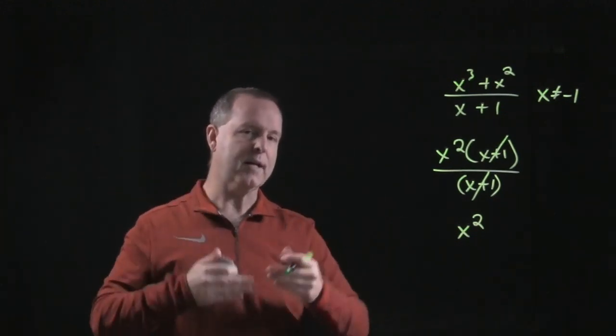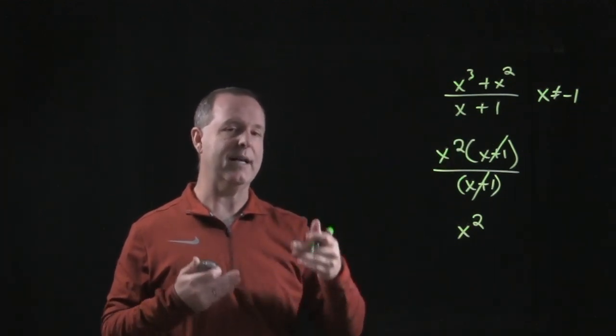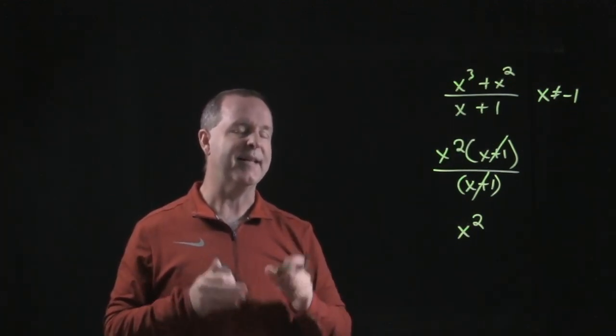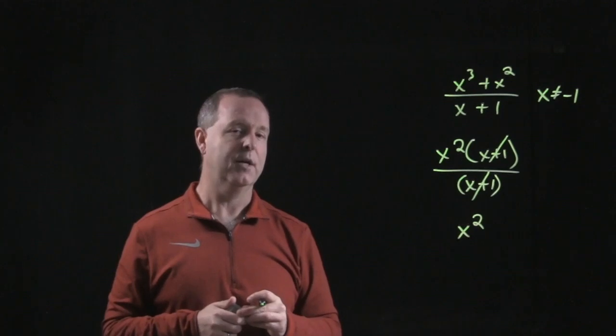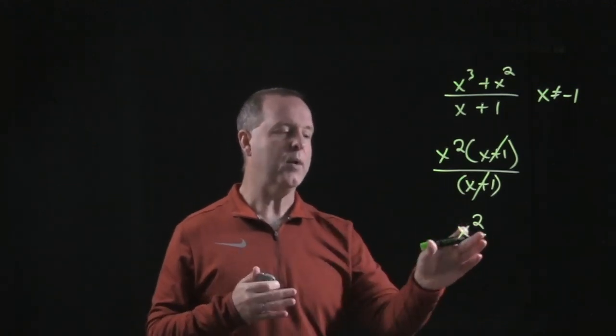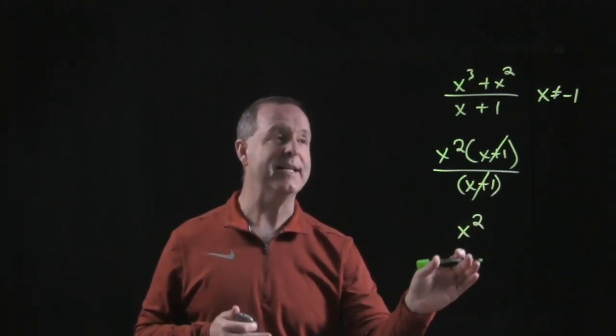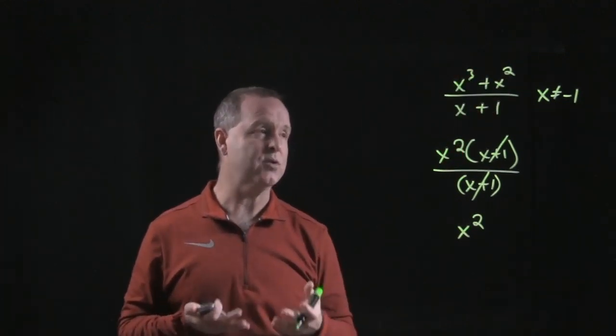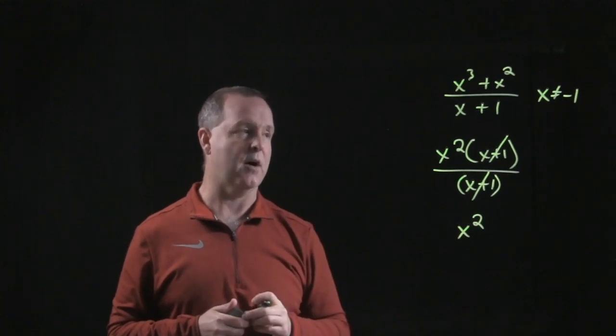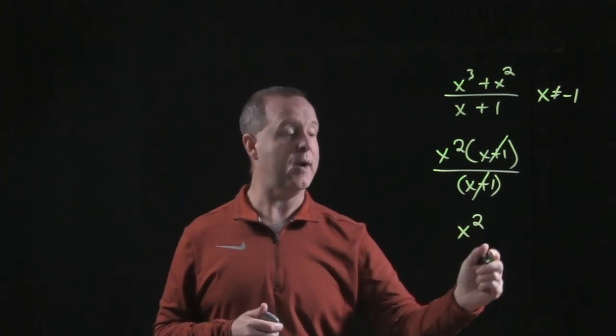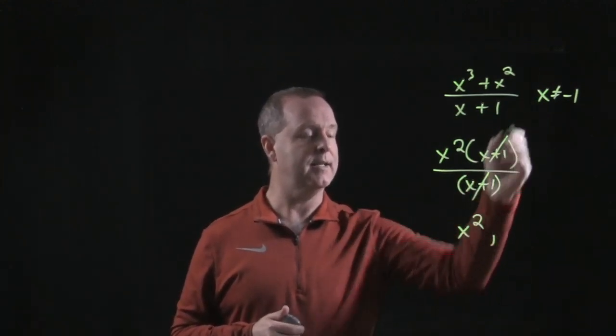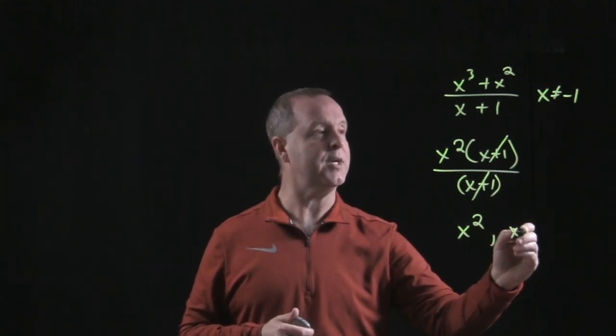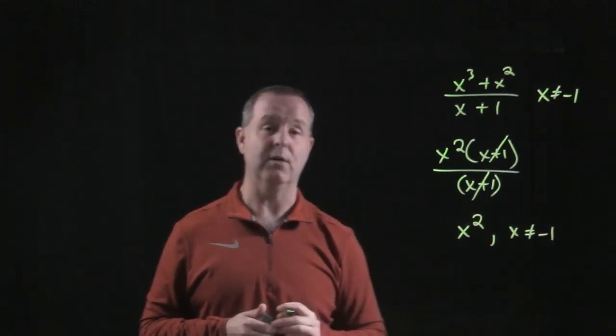Sometimes, as you're working through a problem, the restriction will kind of disappear, but that doesn't mean it's still not there. So as we work these problems, we understand that x squared is equivalent to the original expression here, which maintains or it contains its original prohibitions on that. So my solution is x squared, but I have to keep in mind that my restriction is still in place.